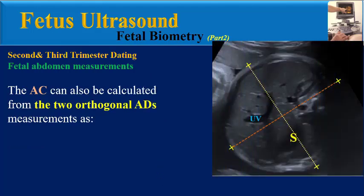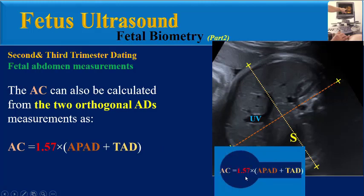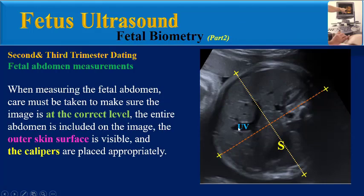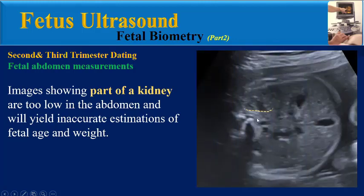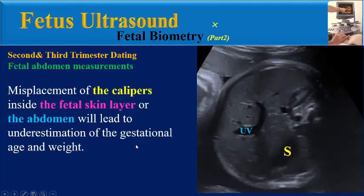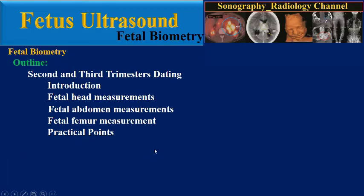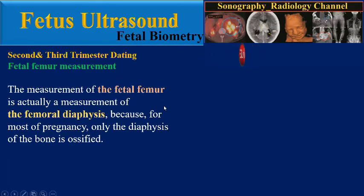The abdominal circumference is measured via elliptical calipers outlining the outer surface of the skin. The AC can also be calculated as: AC = 1.57 × (APAD + TAD). Care must be taken to ensure the image is at the correct level, the entire abdomen is included, the outer skin is visible, and calipers are placed appropriately. Images showing part of a kidney are too low and will yield inaccurate estimations. Misplacement of calipers inside the skin will lead to underestimation of gestational age and weight.